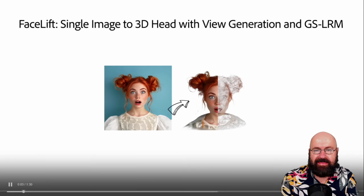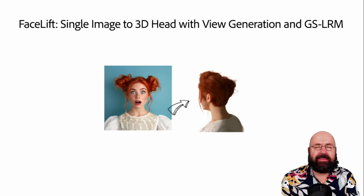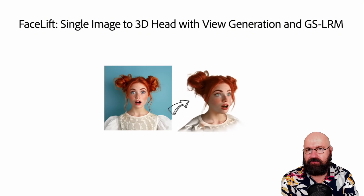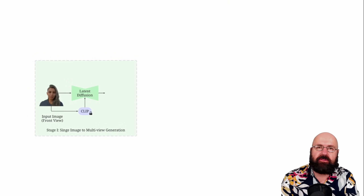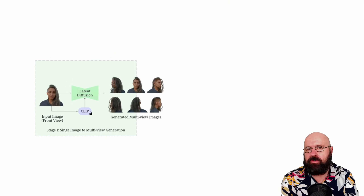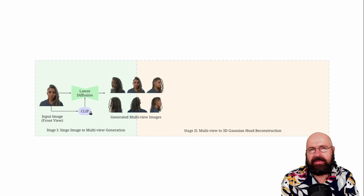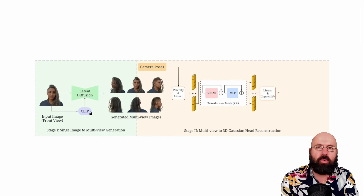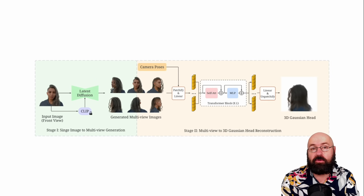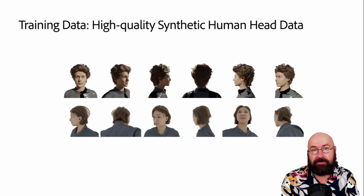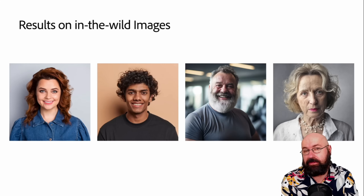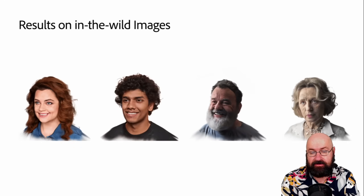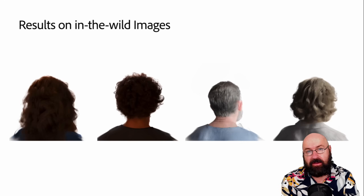There is also research called Facelift by Adobe and the University of California, which I showed you in a short yesterday. What it does is take a single image from the frontal view — a portrait — and create a 3D shape from that. This is actually a Gaussian splatting output, not a polygon model, but as we've seen, you can now generate actual 3D data from Gaussian splatting that you can use afterwards.